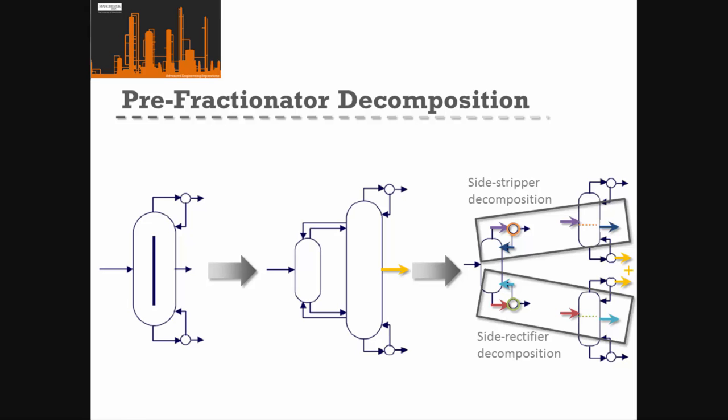If we've got a prefractionator or a dividing wall column, we can start from a dividing wall column, split that out into a prefractionator. The top part of our column is a side stripper decomposition identical to a side stripper decomposition, and the bottom part is identical to a side rectifier decomposition.